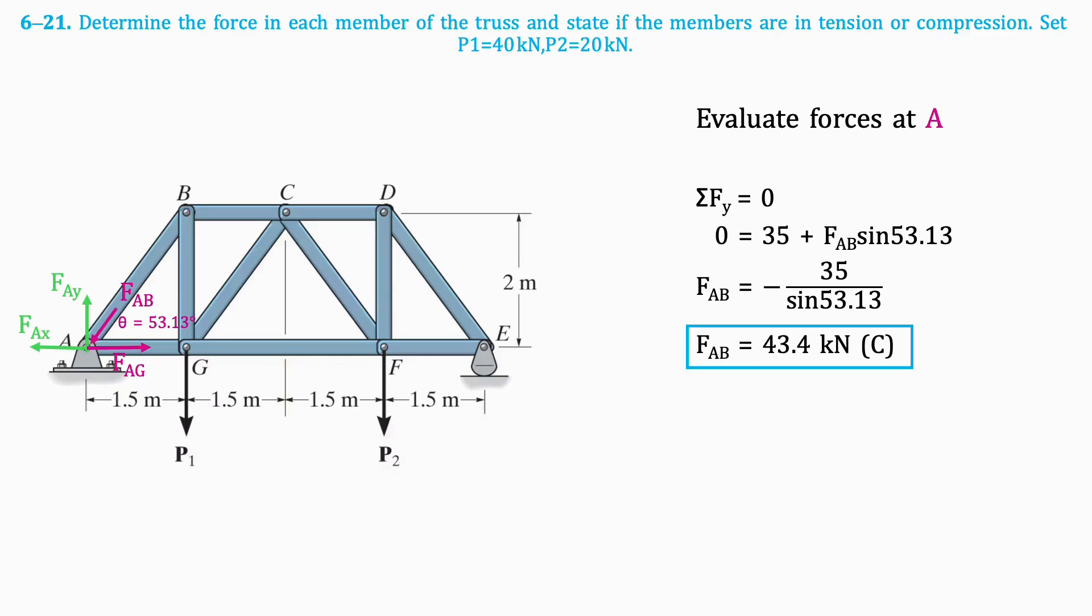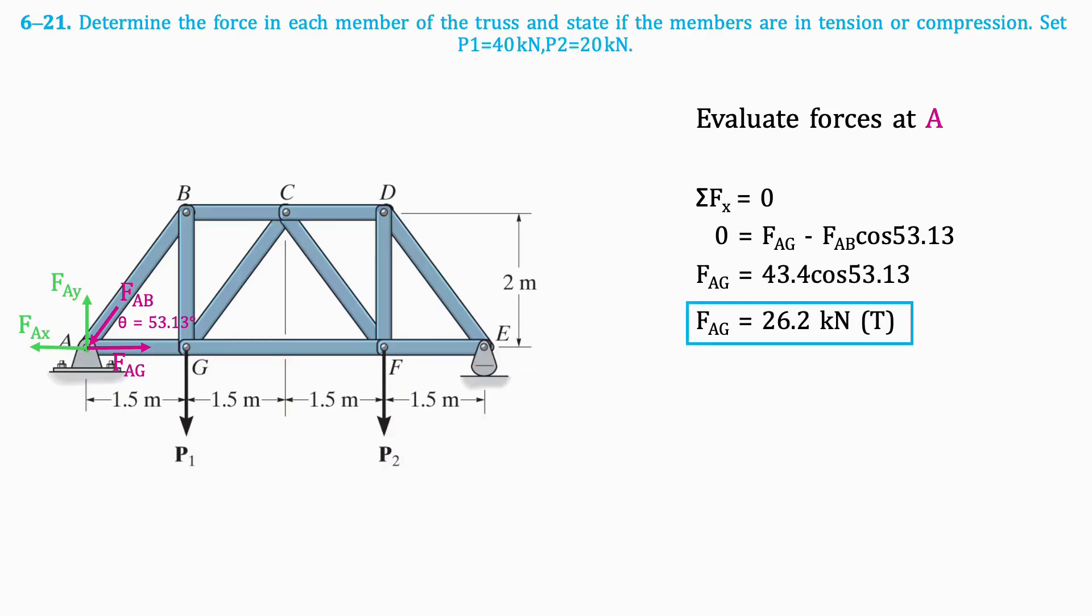Since this is a compression force, we must flip its direction in the free body diagram. Taking the sum of horizontal forces gives that FAG is equal to 26.2 kN in tension.